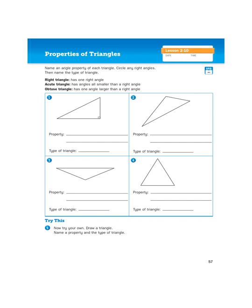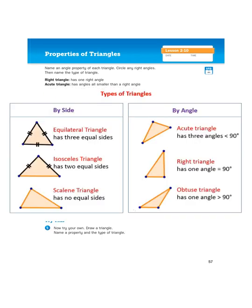For example, looking at a chart that I conveniently pulled off of the internet, if you define a triangle by its sides, an equilateral triangle has three equal sides, an isosceles triangle has two equal sides, and then a scalene triangle has no equal sides.